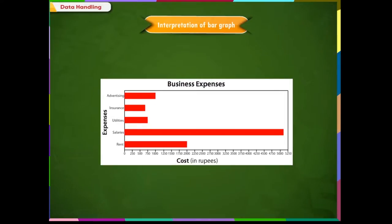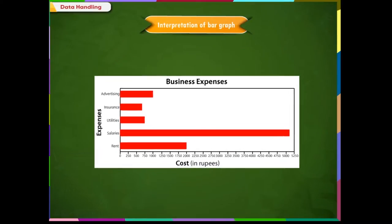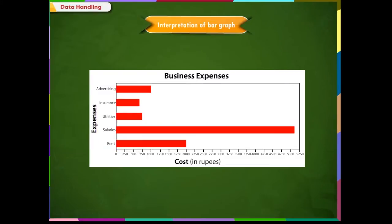Let us interpret another bar graph. Mr. Sharma recorded the data of his business expenditure as a bar graph. This shows the business expenditure on advertisement, insurance, utilities, salaries and rent.